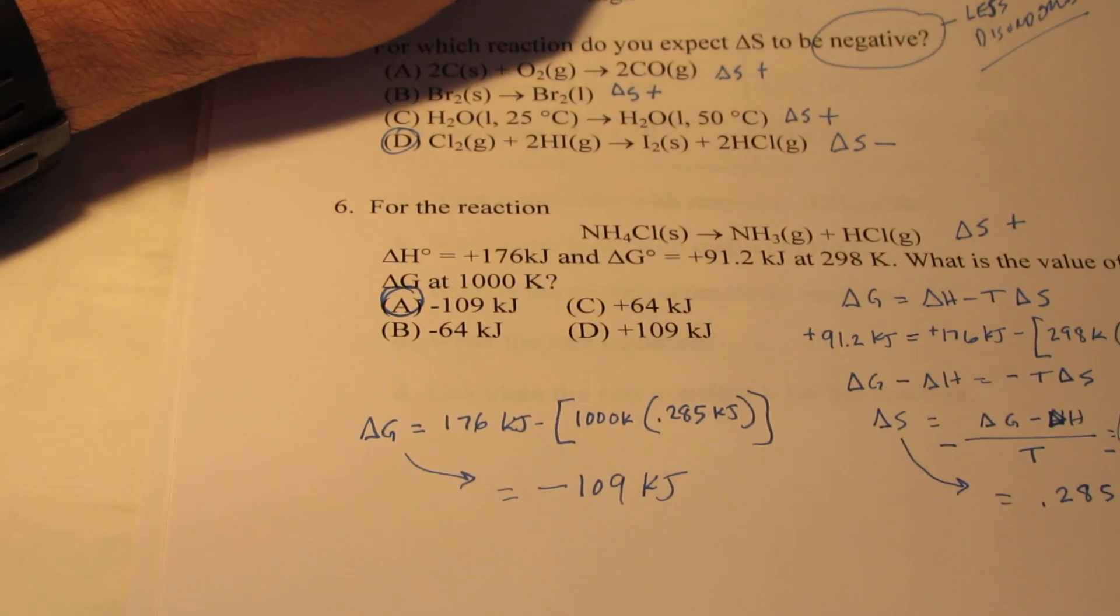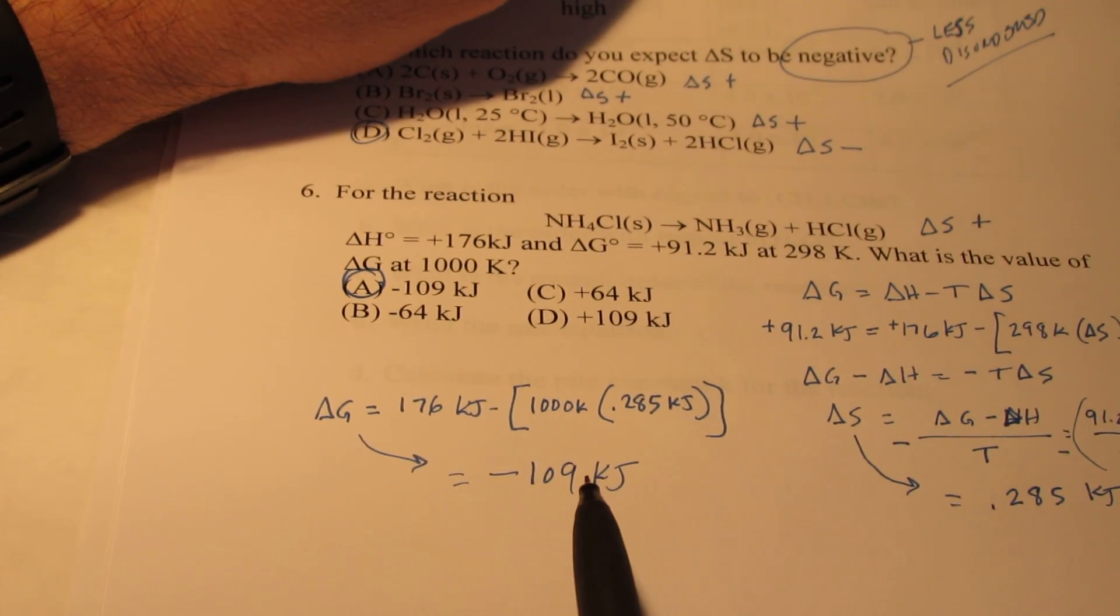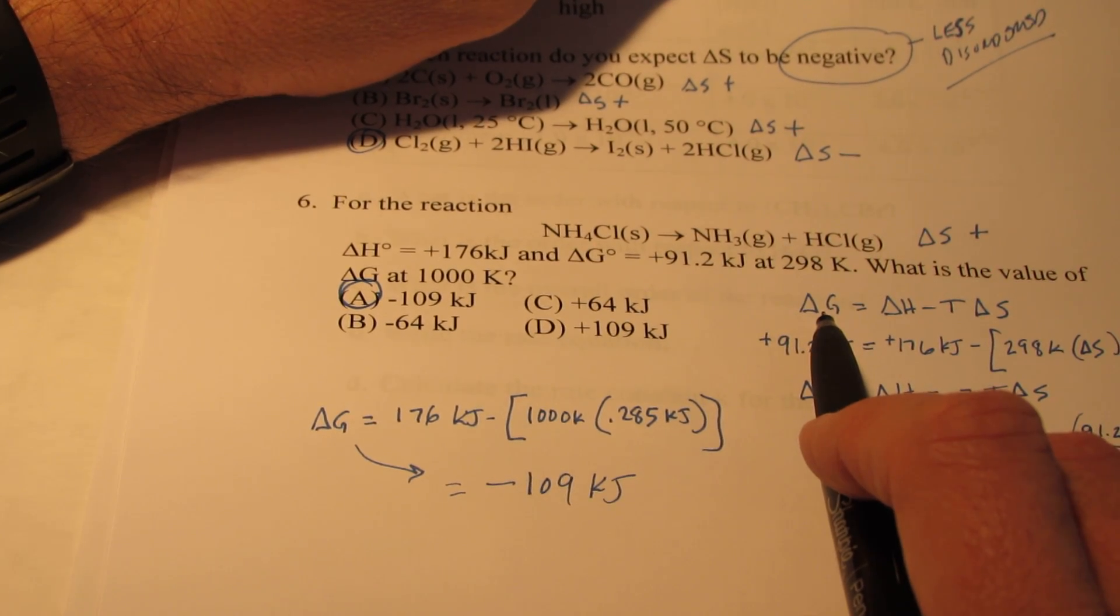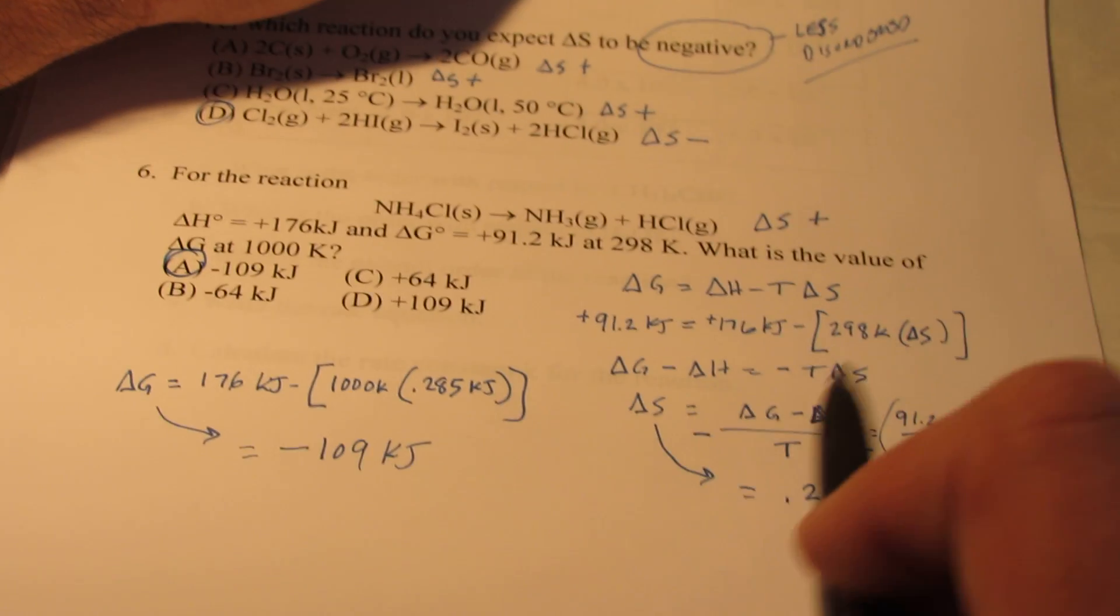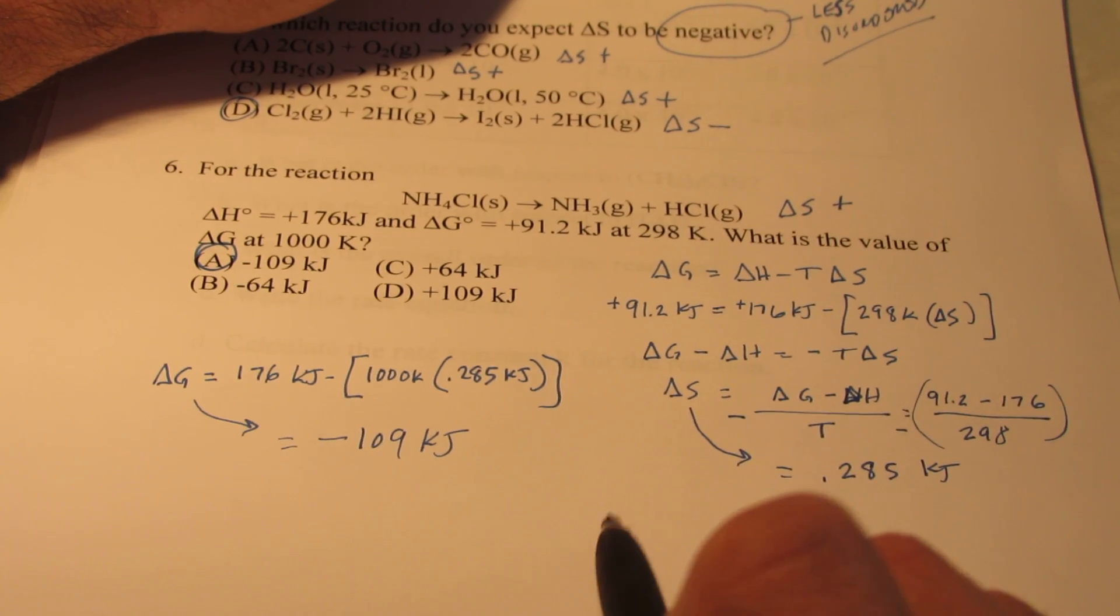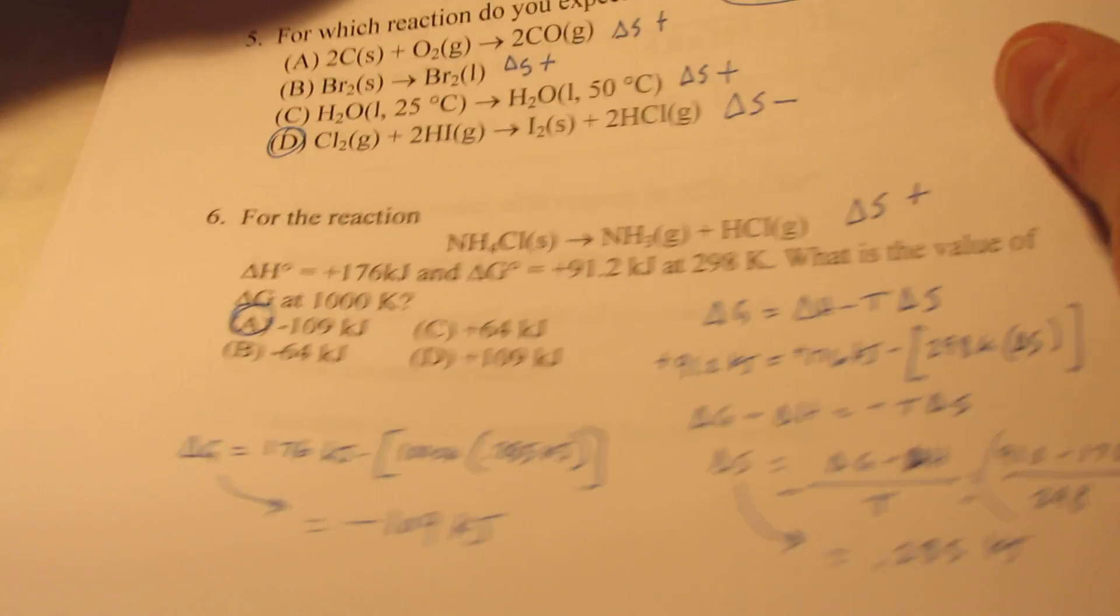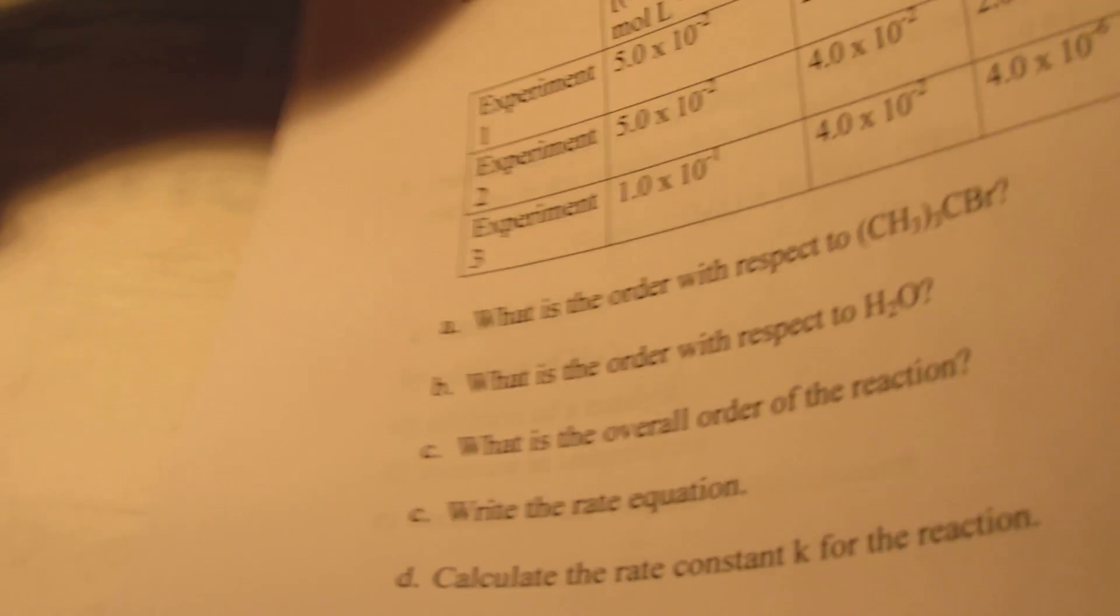Now on the exam, once again, I probably won't have you do one this difficult. I'll probably just have you solve for Delta G and determine whether the reaction is spontaneous or not. But this was a good review problem. If you can do this one, you should be able to do any that I put on the test.